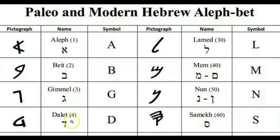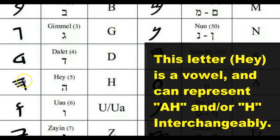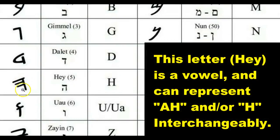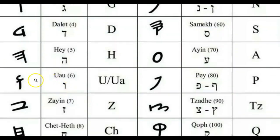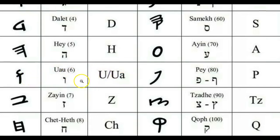The fourth letter is the Dal, or Dalet, which represents a door and makes the D sound. The fifth letter is the Hay, which makes the Ah or H sound and is a vowel. The sixth letter is the U, commonly known as Vav in the Modern, which makes the U sound and represents a nail.